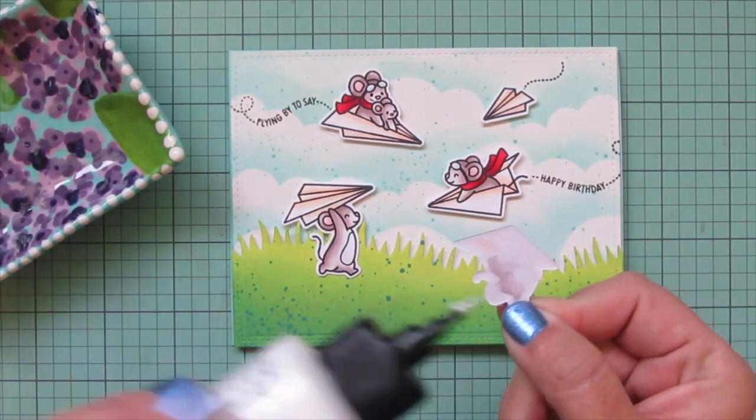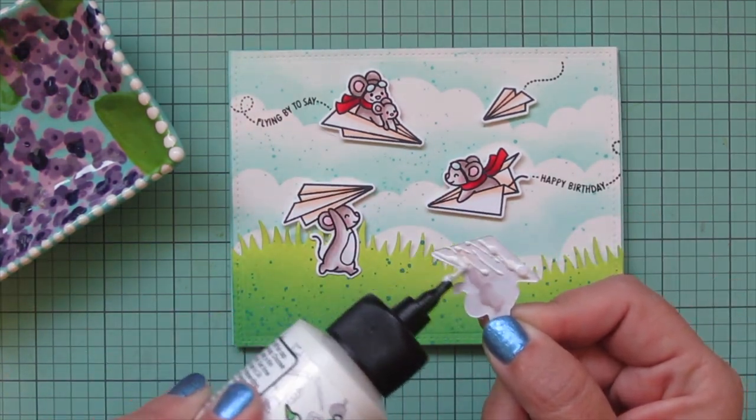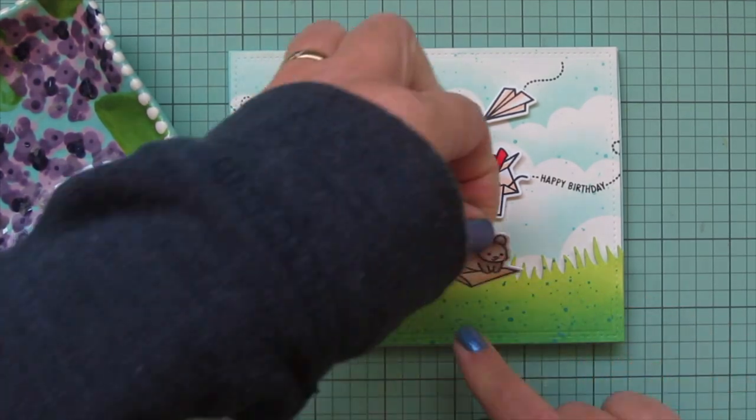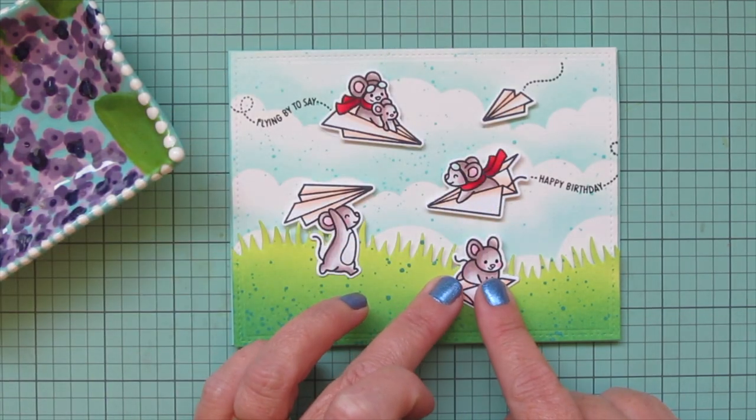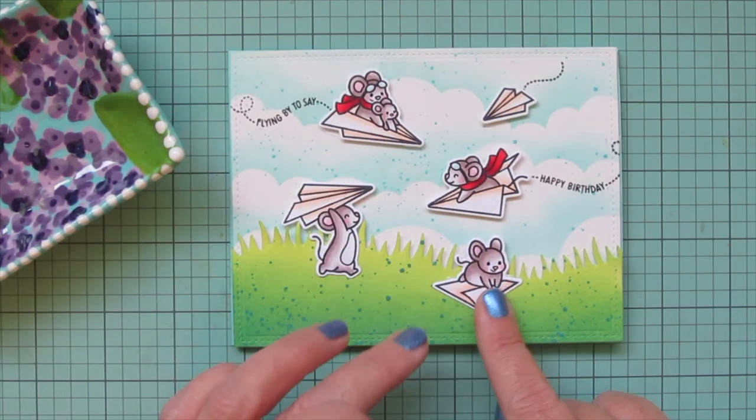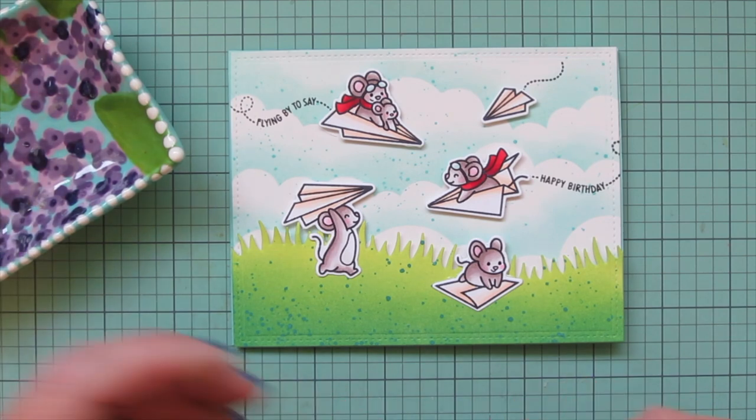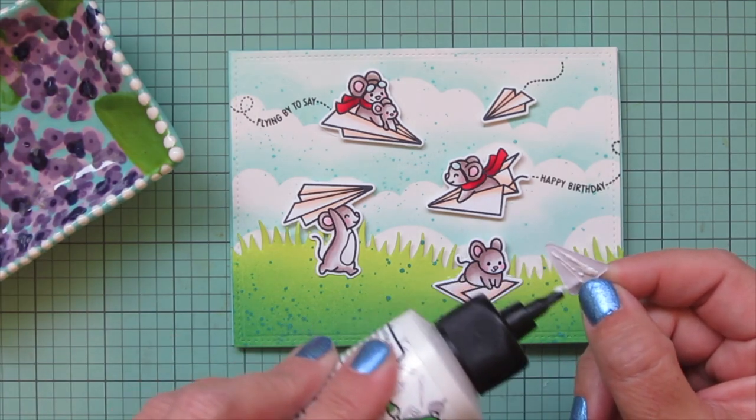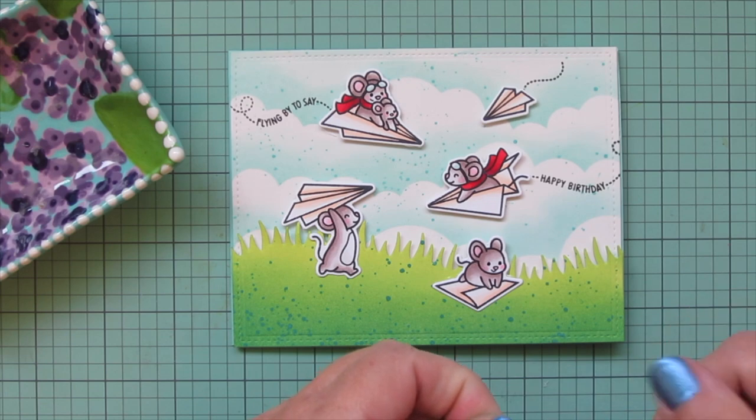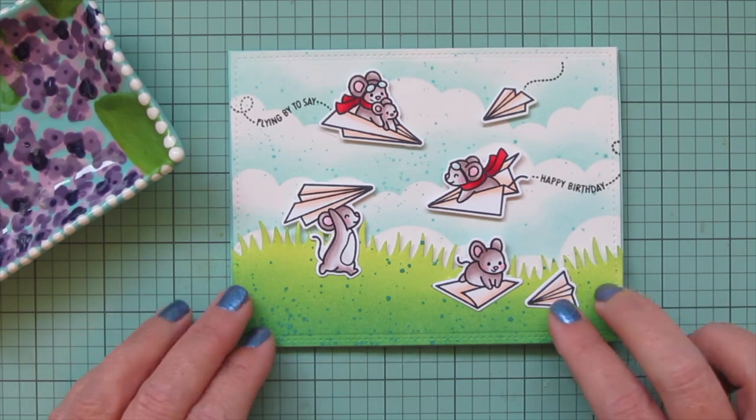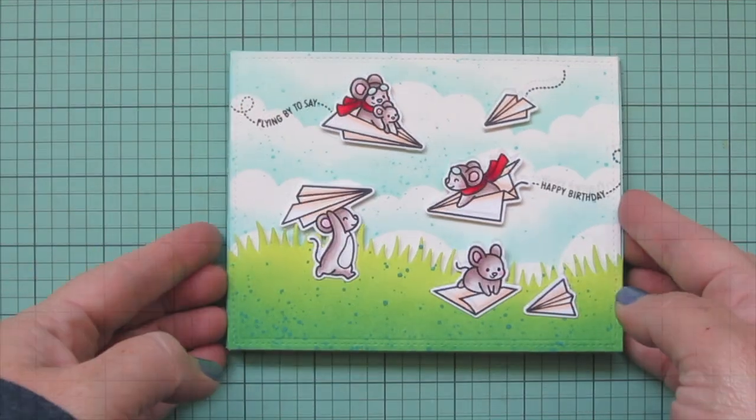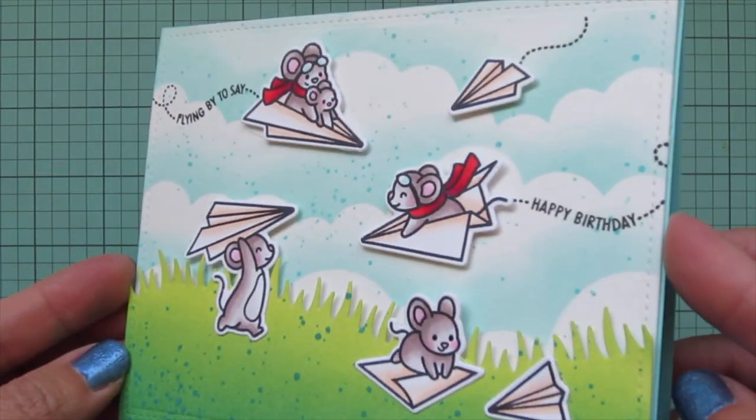Over on the right I'm going to have the mouse who is building the paper airplane so I've got him kind of folding up the paper on the right-hand side. Then right next to him I'm going to add that last paper airplane because he's kind of doing all the work for everybody, getting all their airplanes ready to go. That is actually going to finish off this card.